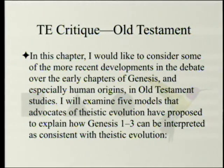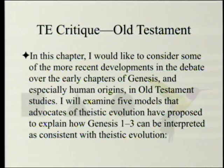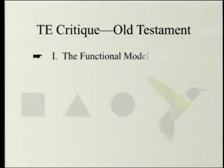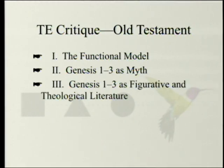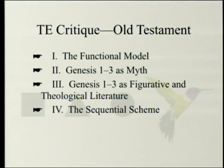In this chapter, I would like to consider some of the more recent developments in the debate over the early chapters of Genesis, and especially human origins in Old Testament studies. I will examine five models that advocates of theistic evolution have proposed to explain Genesis 1 through 3, how it can be interpreted as consistent with theistic evolution: the functional model; Genesis 1-3 is myth — those are the ones we'll cover today; Genesis 1-3 is figurative and theological literature; the sequential scheme; and etiology as methodology.